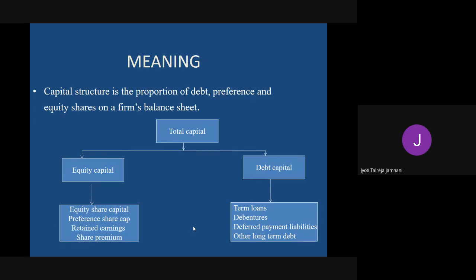Capital structure is majorly divided into two parts: equity capital and debt capital. When we talk about equity capital, we consider equity share capital, preference share capital, retained earnings, and share premium. When we come to debt, we talk about all types of loans.